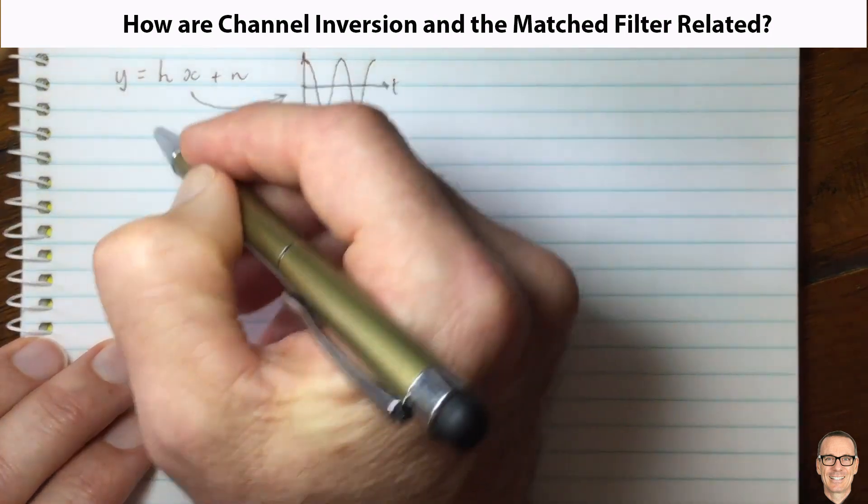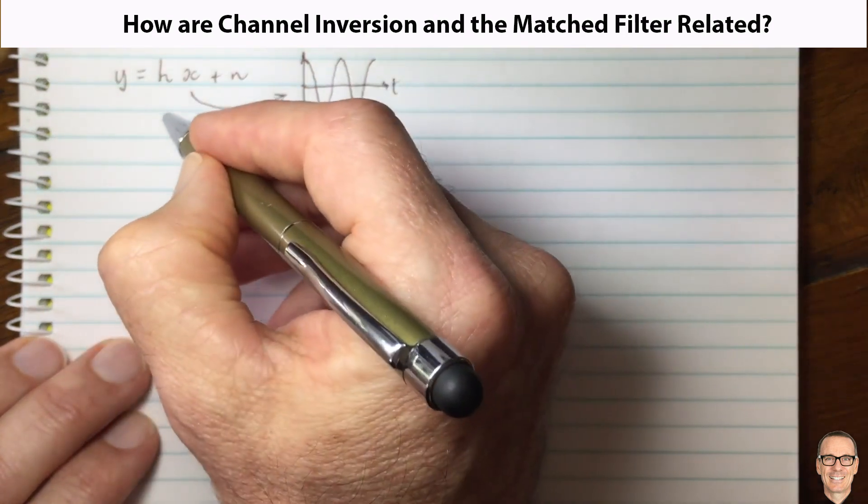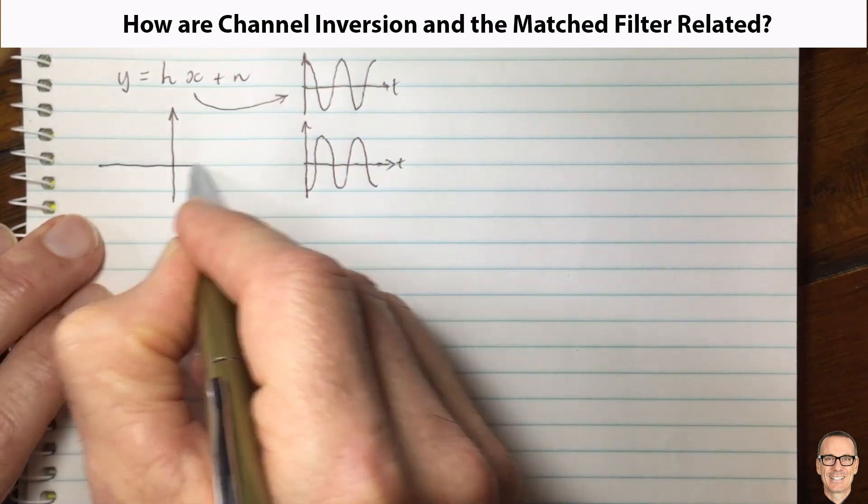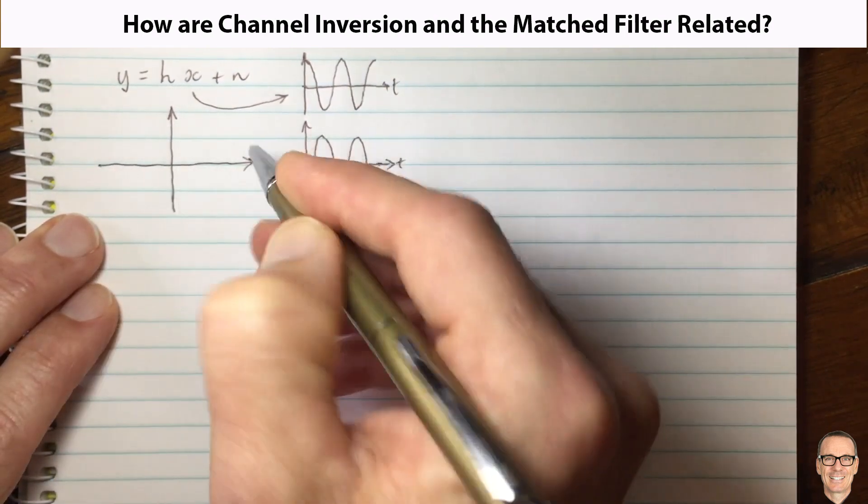So in baseband, these two waveforms can be represented by a complex number, and that's what this equation is showing. This complex number is on the real and imaginary.